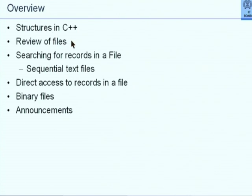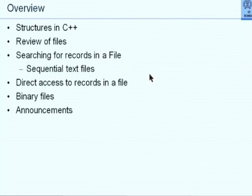After that we will do a very quick review of whatever simple things about files that we have seen earlier, and then we will look at some algorithms which will work on files that contain data. More important for us will be the notion of direct access to records in a file. In that context we will be discussing files which we have not seen so far, namely files containing encoded data, called binary files, as opposed to text files that we are all used to.